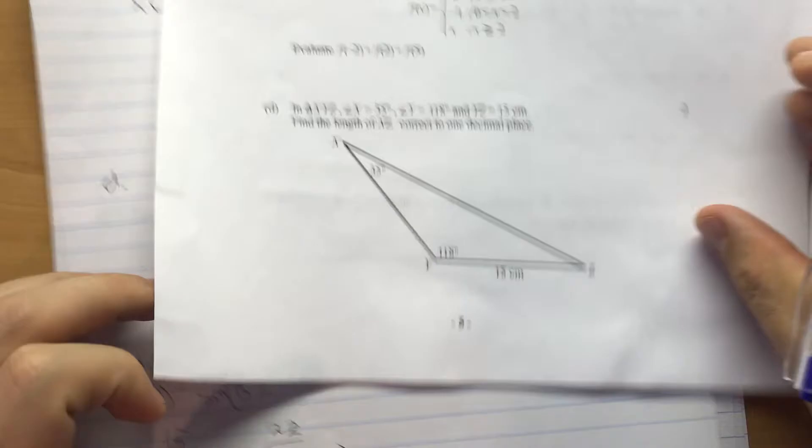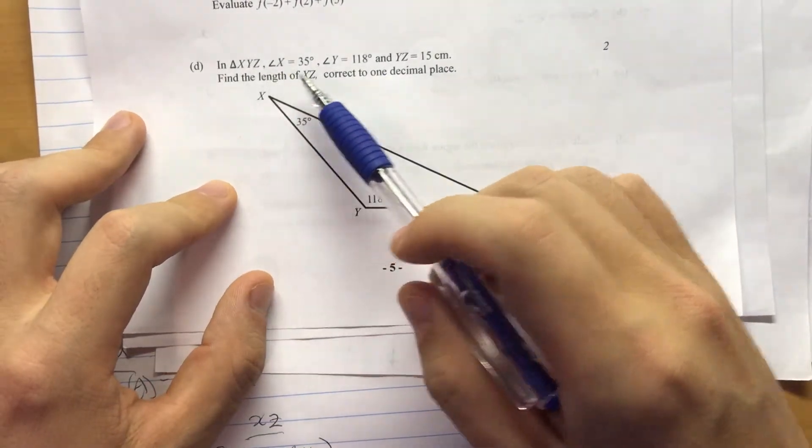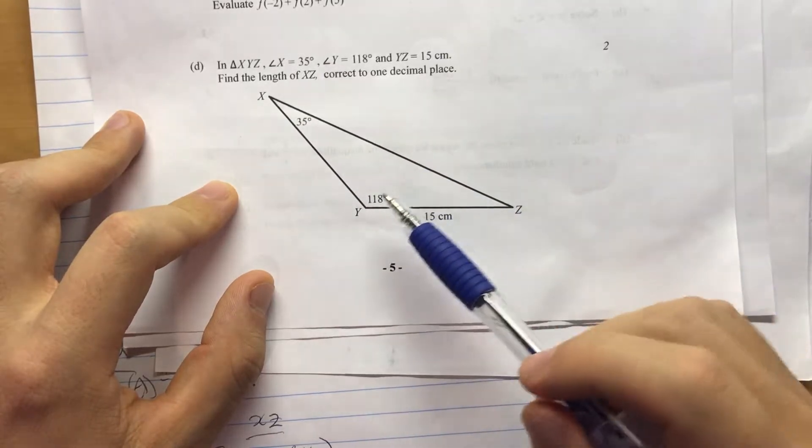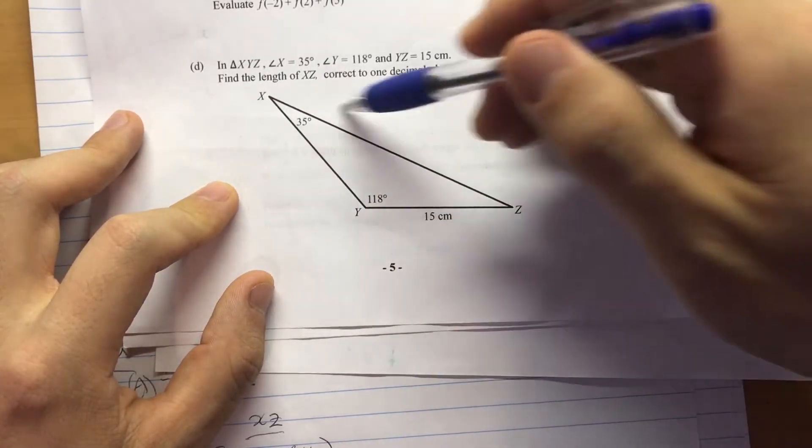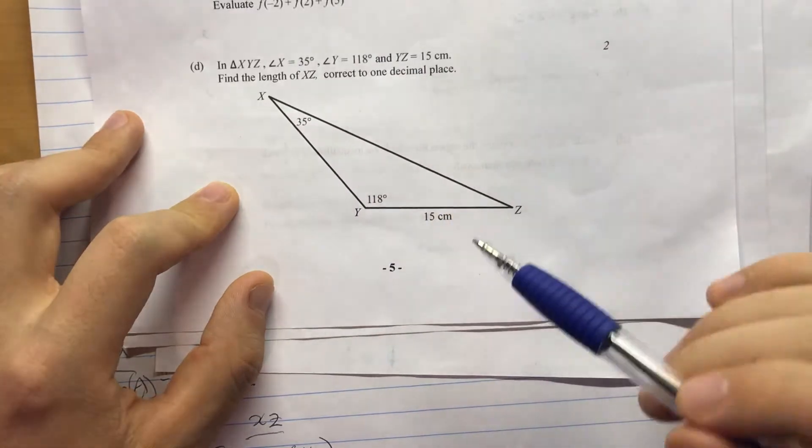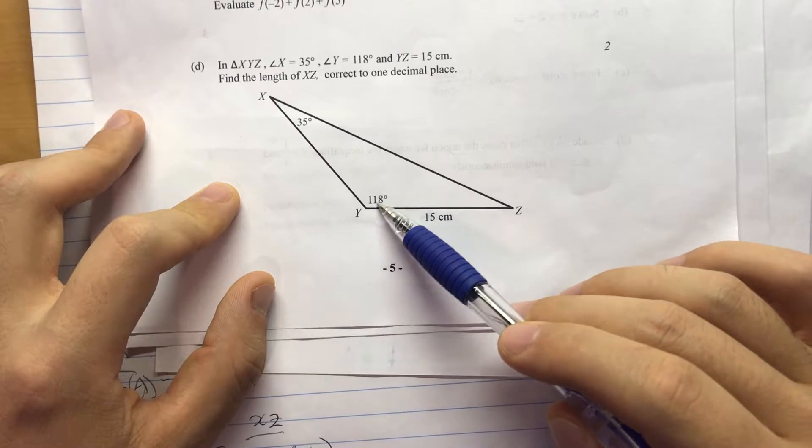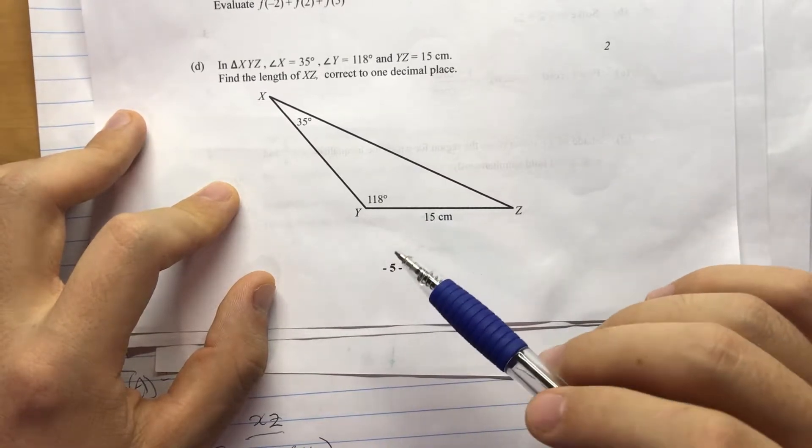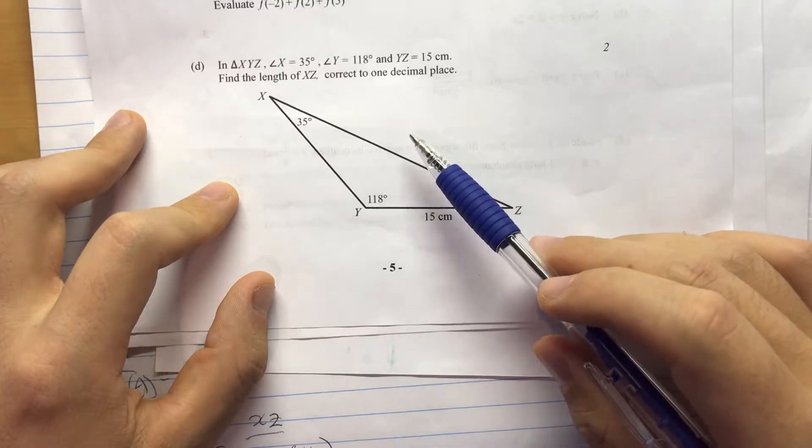Alright. One more question. Part D. Triangle. This is 35°. This is 118°. And this is 15. Find the length. It's a long length. Correct to one decimal place. And it is long because this is not an acute angle.